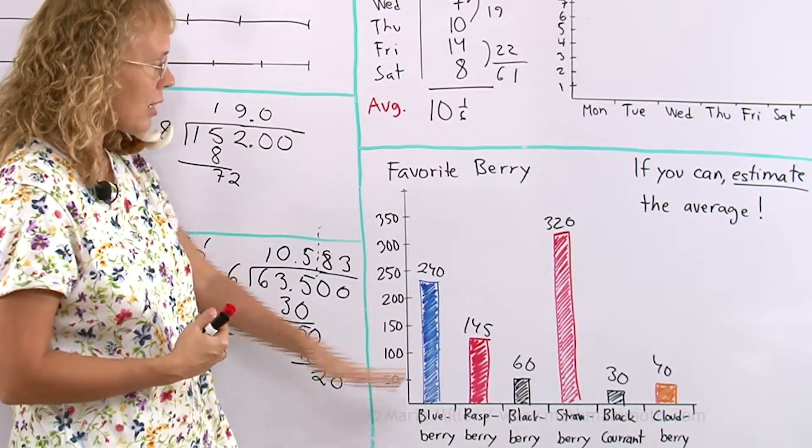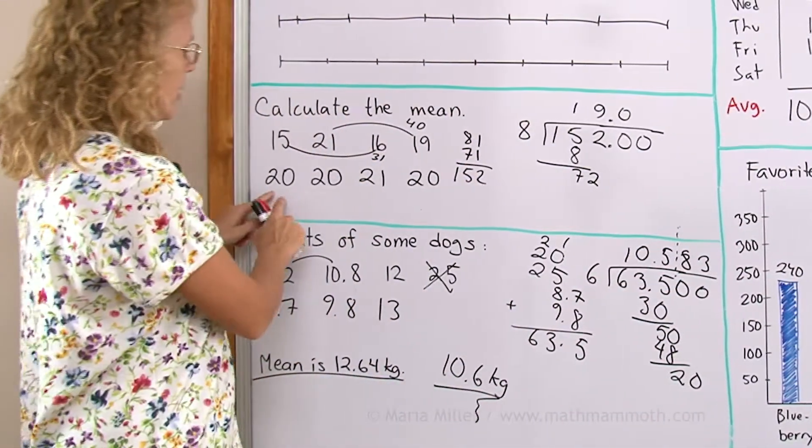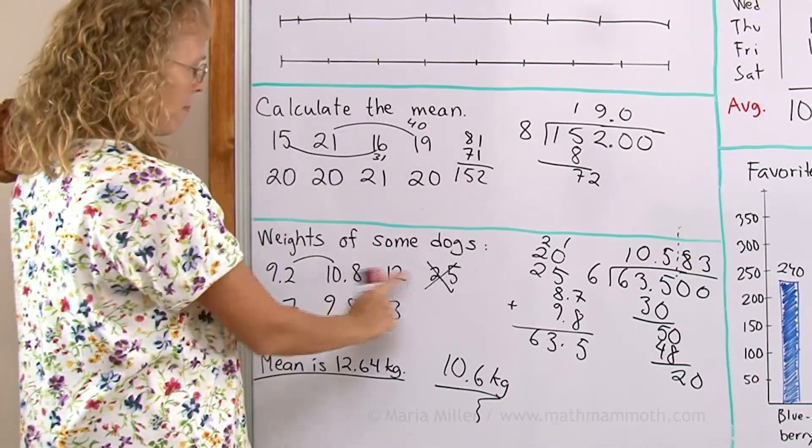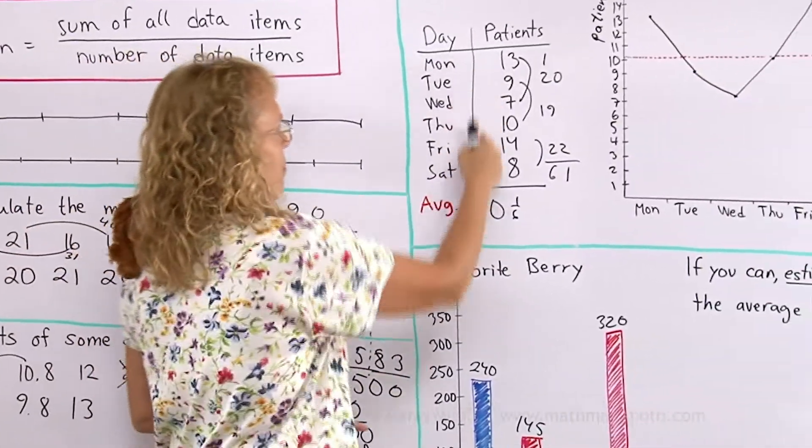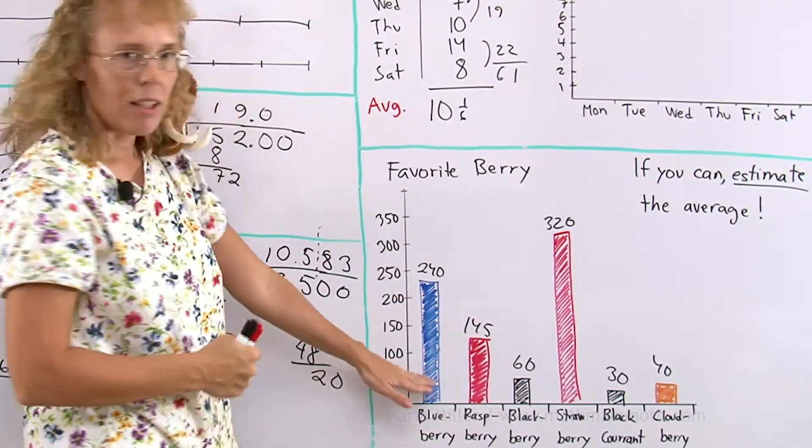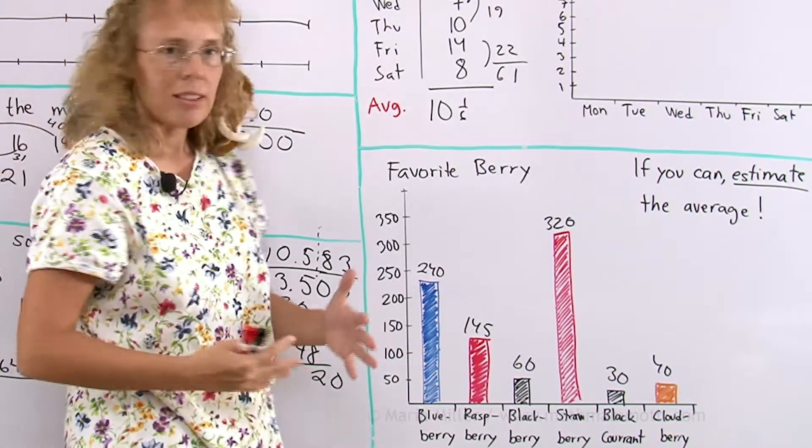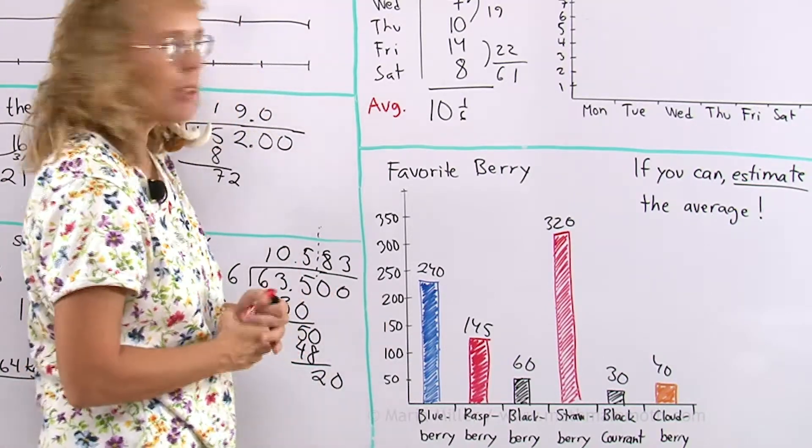What produced this graph? What kind of data was there? See? This is data. Data items here. These individual numbers. What kind of individual things, data items were there that this bar graph was made out of?